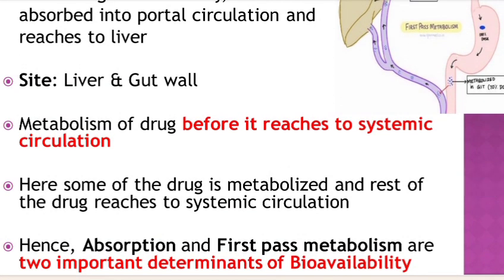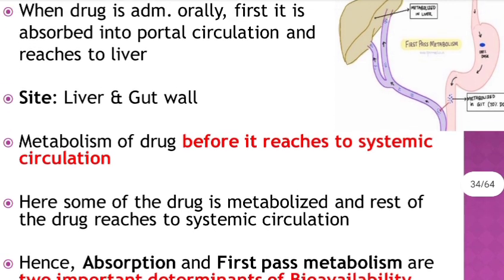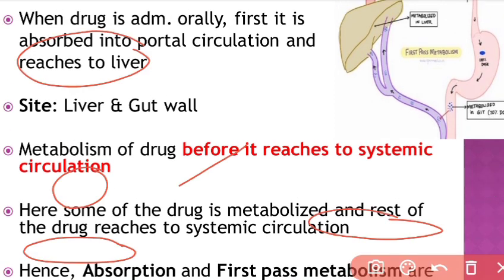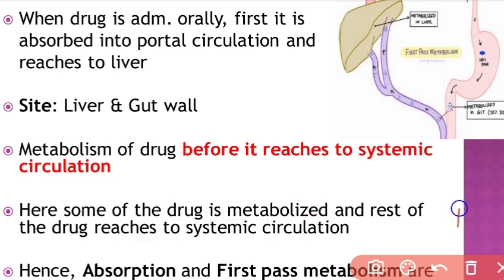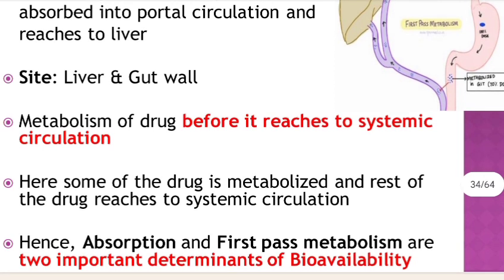Some of the drug is metabolized and the rest of the drug reaches to the systemic circulation. Whenever a drug is given orally or swallowed, some of the drug is metabolized in the liver and the rest reaches to the systemic circulation.